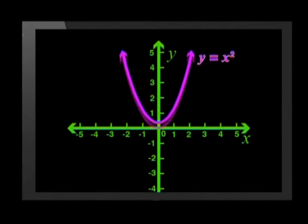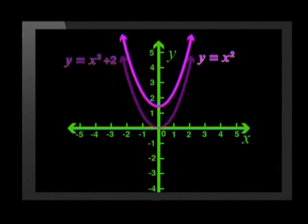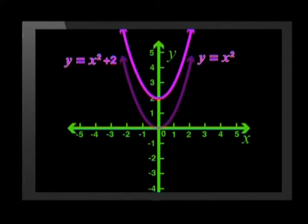That's easy. The graph will move up the y axis by 2 units. If you increase q by 1, it shifts up 1 unit. If you increase q by 2, it shifts up 2 units, and so on.